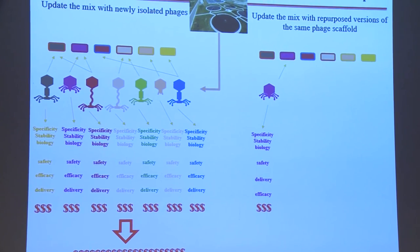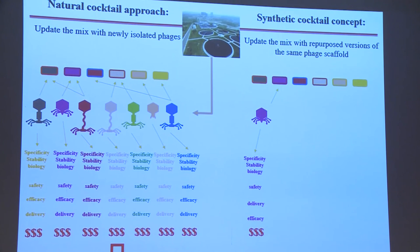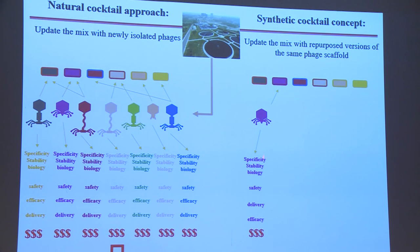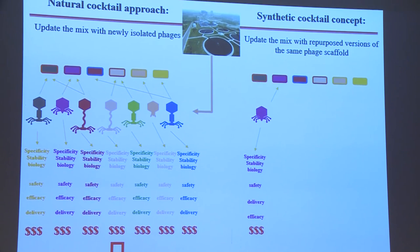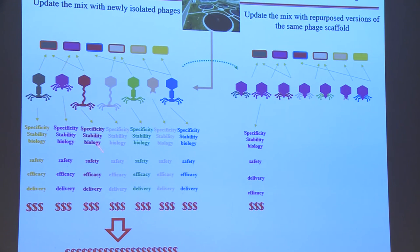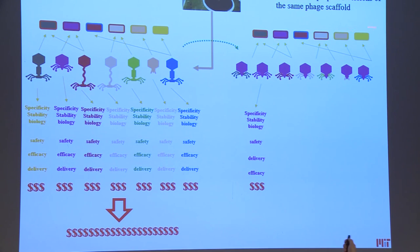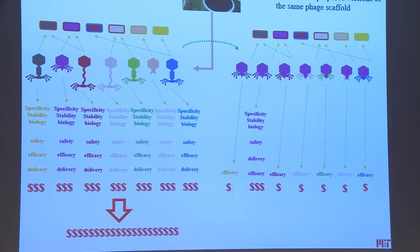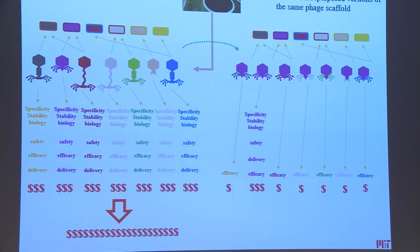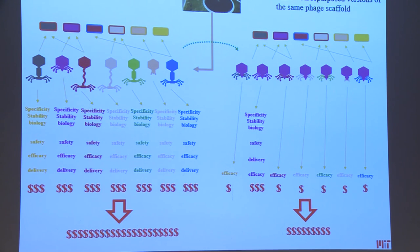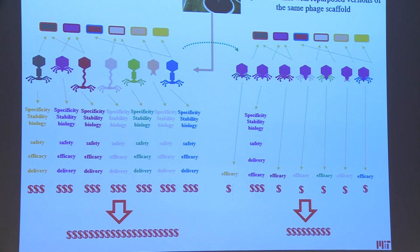What if, instead of that, we use a single chassis — a single well-characterized phage — make all of those testings once, and then simply graft from natural phages or DNA banks the sequences needed to make that single chassis infect all of the required strains? This would hopefully limit the amount of testing needed for medical approval. At this point this is just a project, but the FDA at least is pretty interested in it, and we have fair hope that this can be a viable solution to phage therapy.